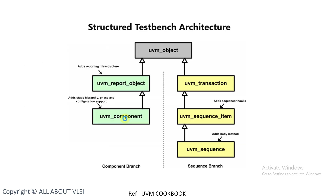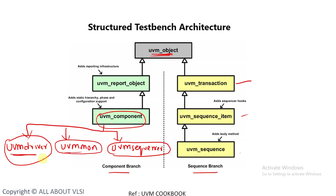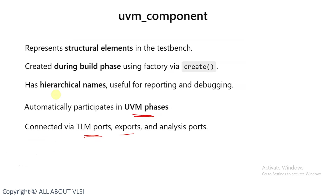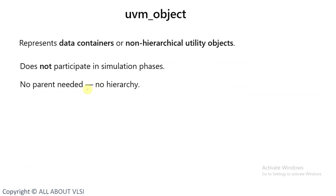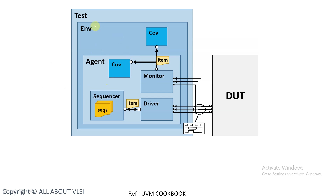A uvm_component represents a structural element and has hierarchy. A uvm_object, on the other hand, is a data container or non-hierarchical utility. UVM objects do not have any hierarchy — they are used only for data stimulus or stimulus generation purposes. This is the key difference between uvm_components and uvm_objects.